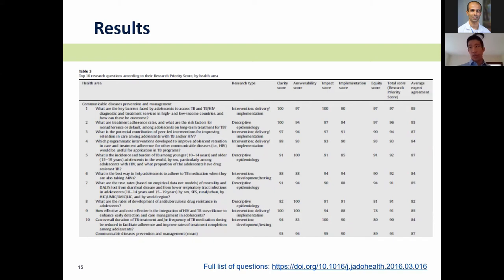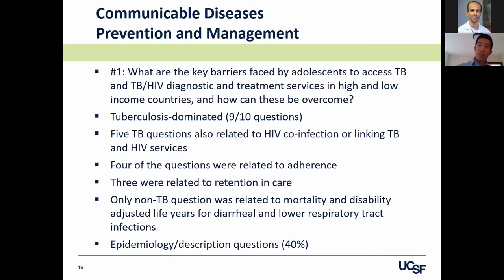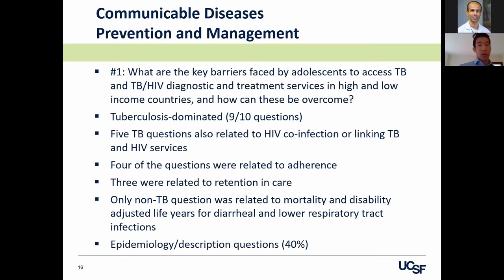The resulting publication has the top 10 questions in each area, available as an open-access Journal of Adolescent Health article. For communicable diseases, the top question was about key barriers adolescents face accessing tuberculosis and HIV diagnostic and treatment services in low and high income countries. A lot of the questions were TB-dominated, since HIV had been covered in a separate sexual and reproductive health priorities process.